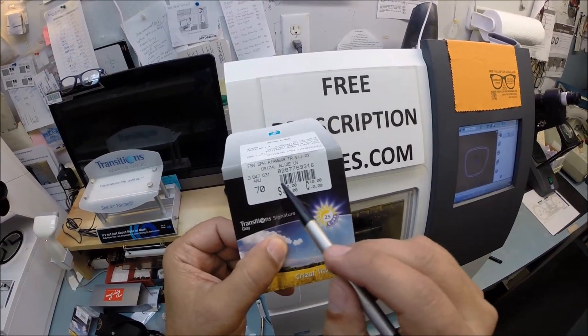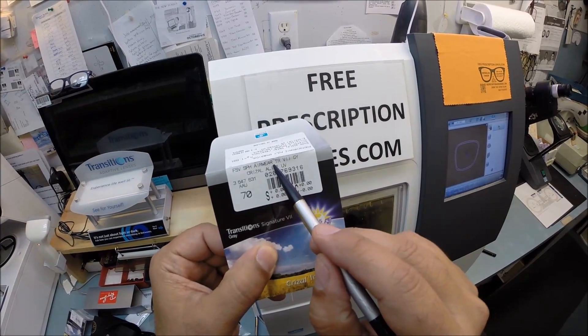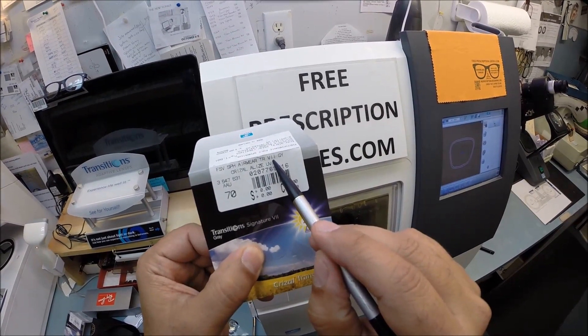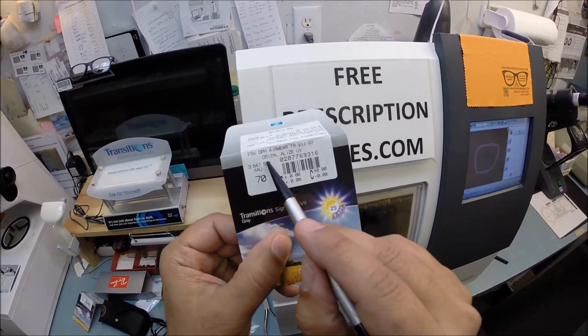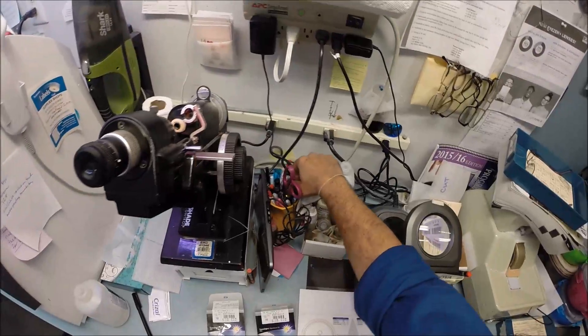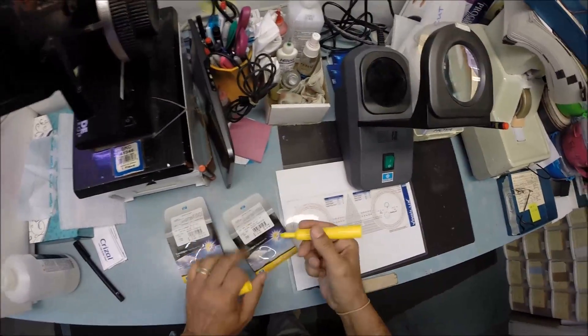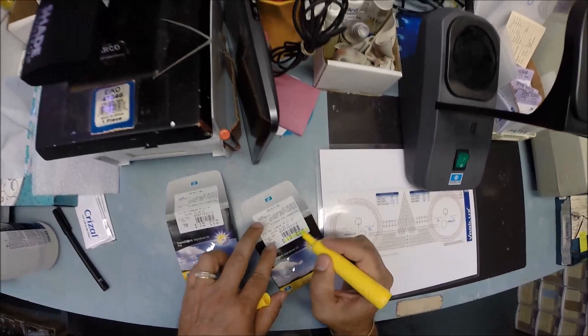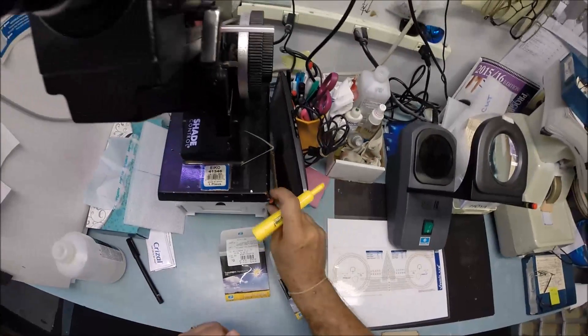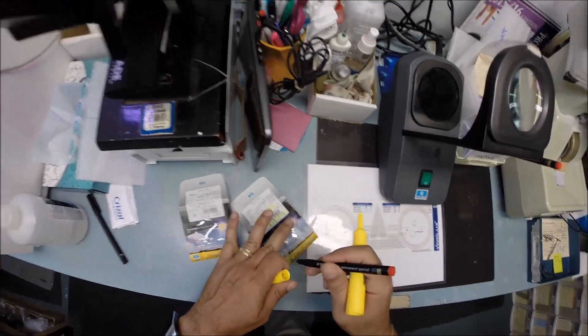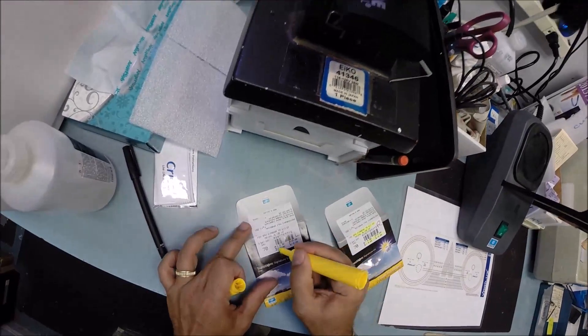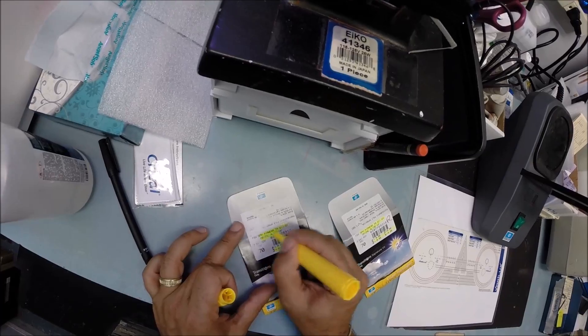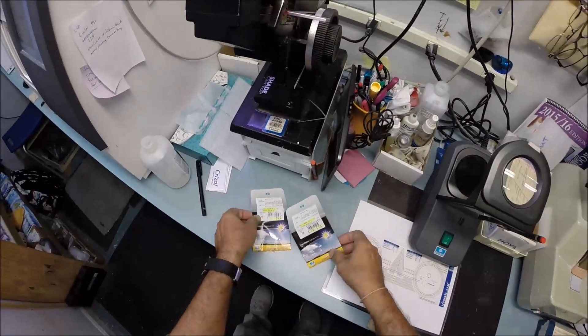Essilor calls polycarbonate Airwear because they feel they're as light as air. TR stands for transitions. The Roman numerals for seven. GY stands for gray. Transition Signature 7 gray lenses with Crizal Alize. Let me go ahead and highlight these. These are non-prescription. Zero-zero. Transitions with Crizal Alize.